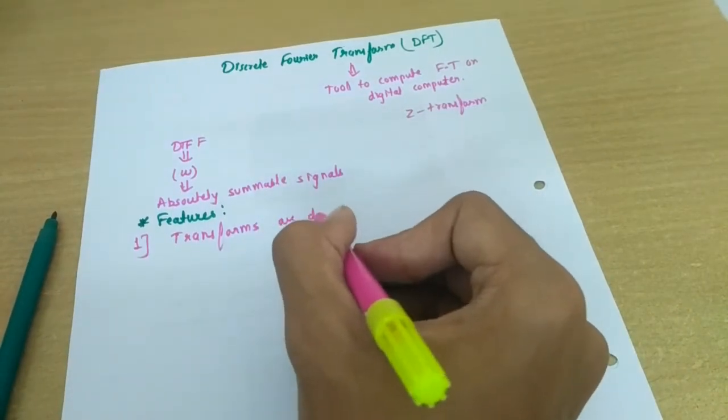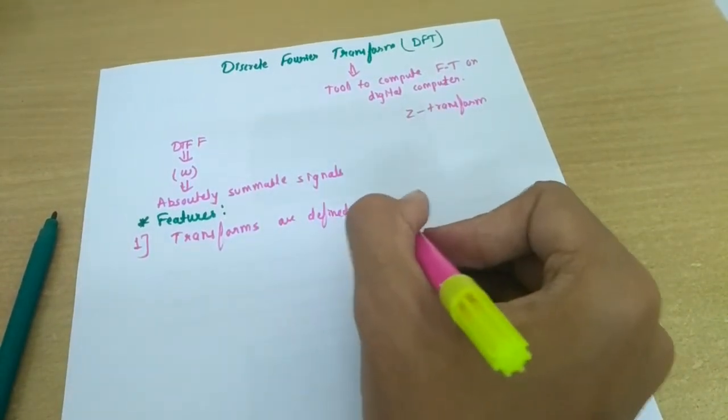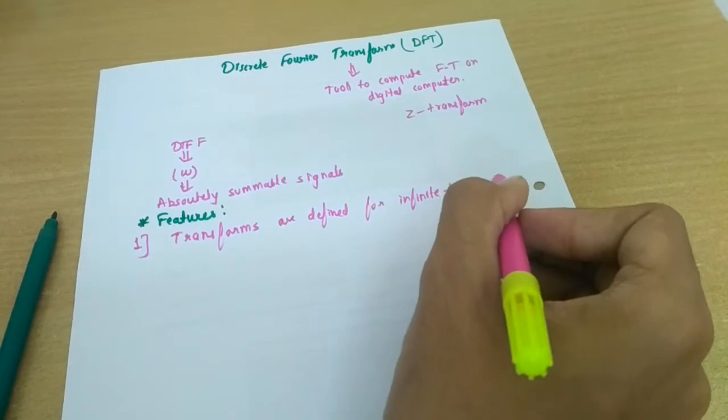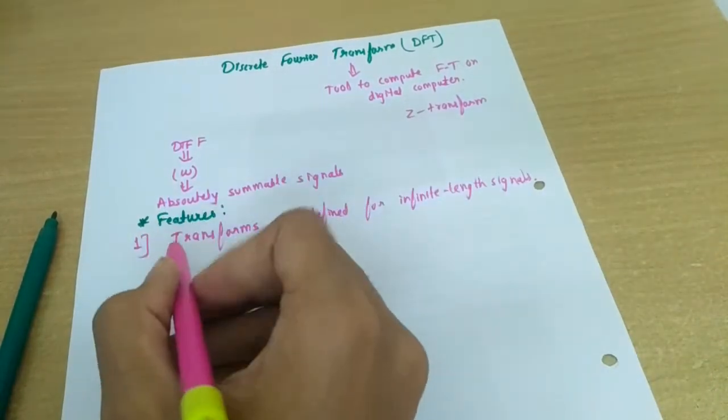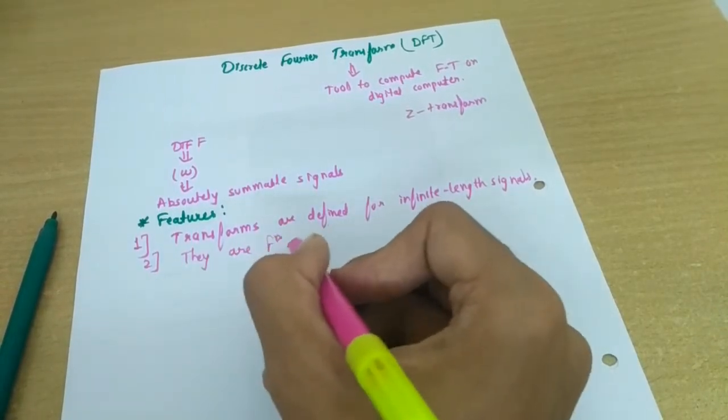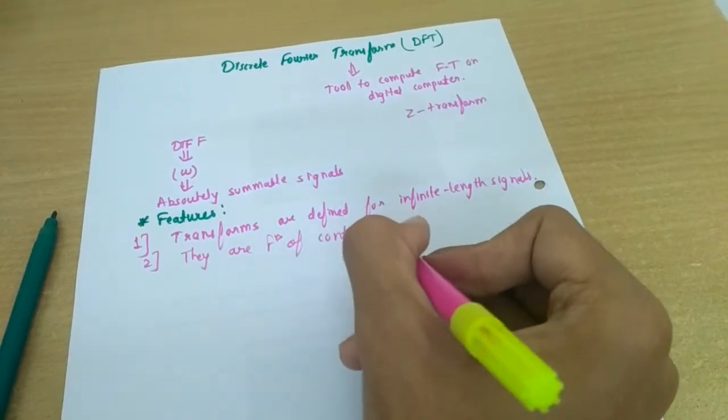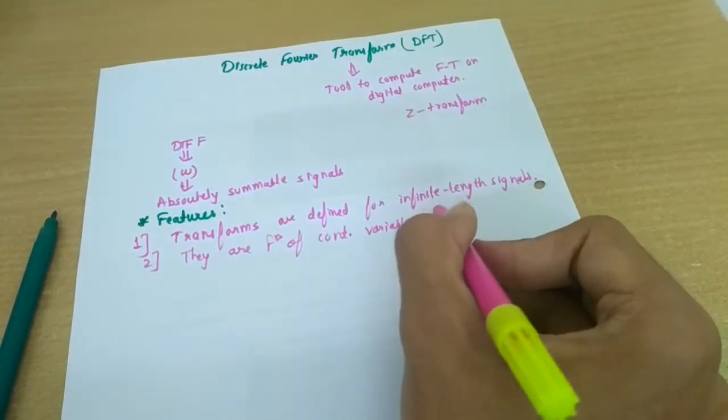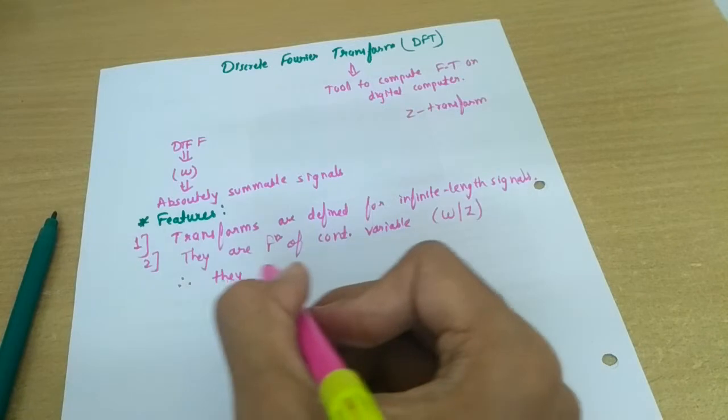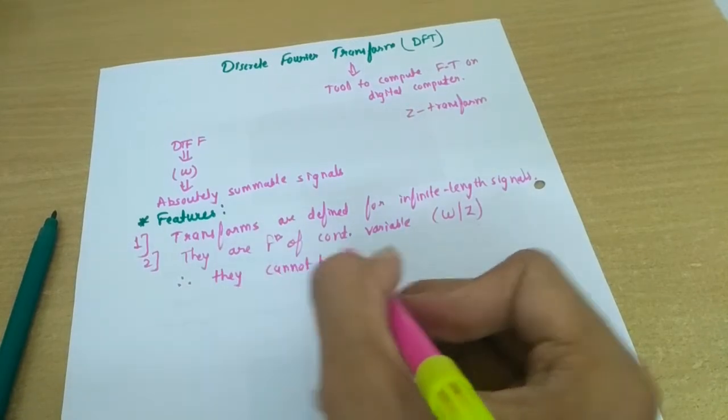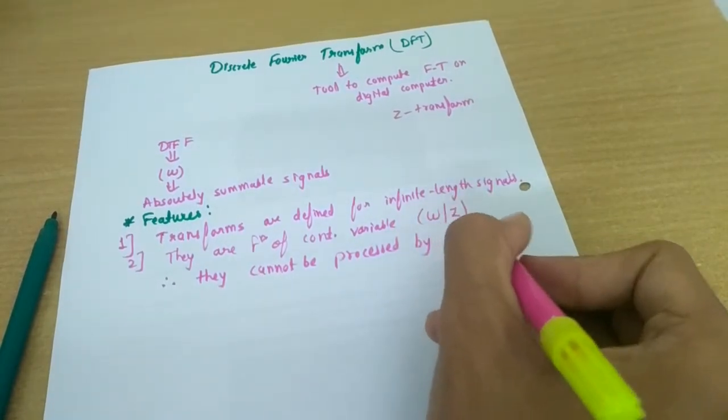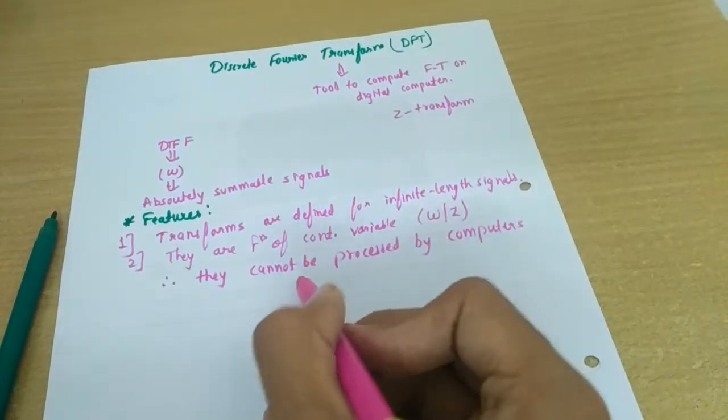Transforms are defined for infinite length signals, and second, they are function of continuous variable - this is continuous variable, that is omega or we can say Z. And therefore they cannot be processed by computers or we can say any processors, or specifically we can say DSP processors.